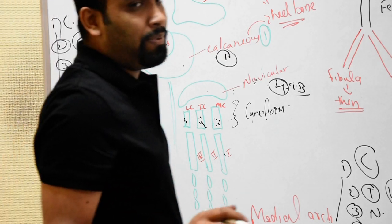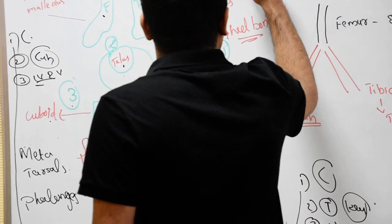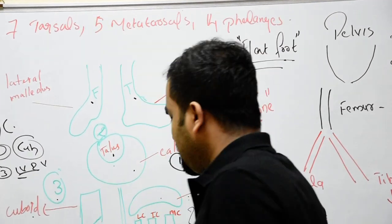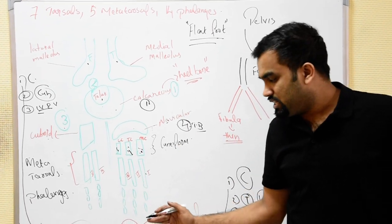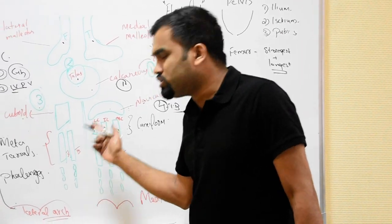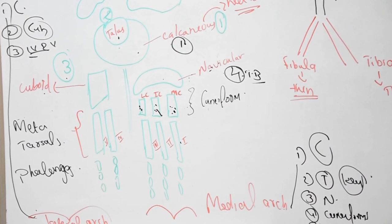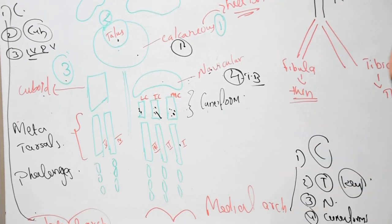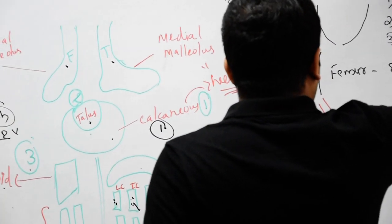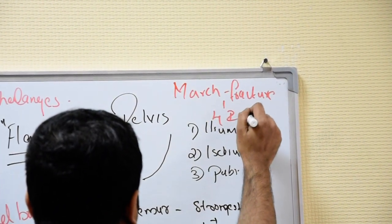Collapse of any of these arches is called flat foot. Now, among the metatarsals, the ones most prone to fracture are the fourth and fifth metatarsals. Fracture of the fourth and fifth metatarsals is specifically called a march fracture — that is an important clinical point to remember.